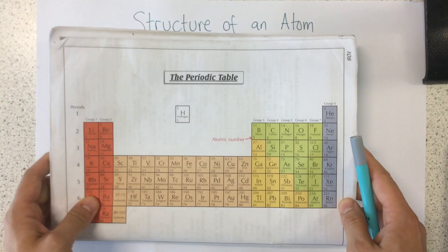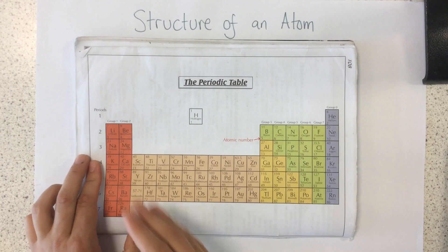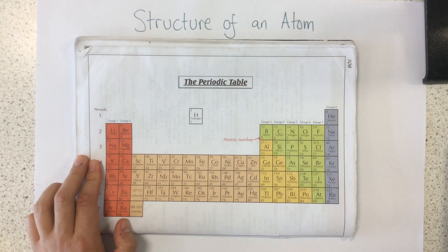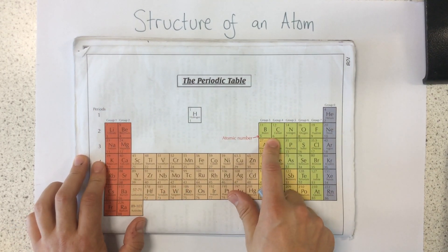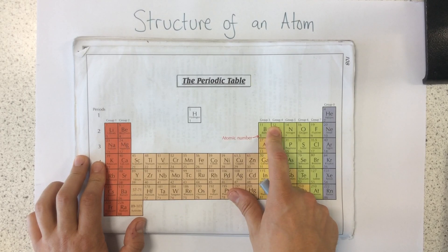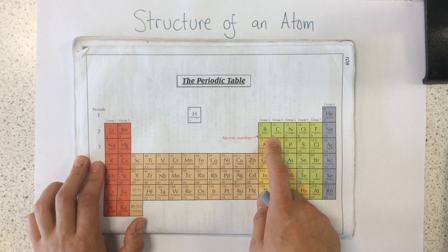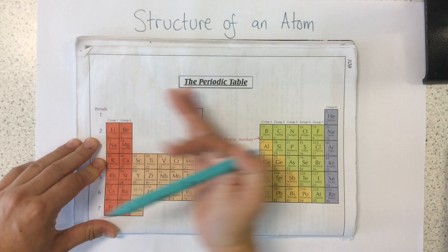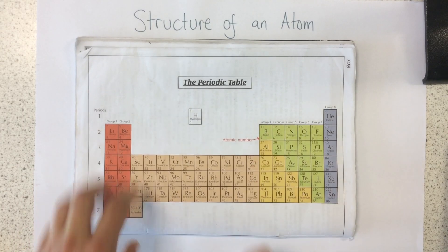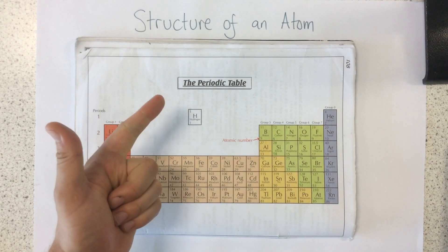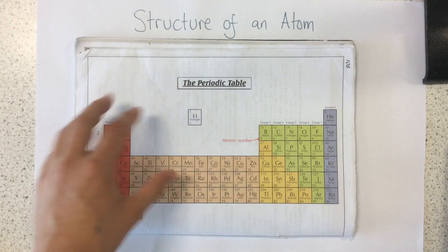So first of all, let's have a look at the periodic table. As we can see, for all of these different elements, they have two numbers. One of them, the bigger one, is called the mass number. The bottom one is called the atomic number, also known as the proton number. So we can see that for each of them, they've got different numbers, and that tells us about the number of protons, neutrons and electrons that are within each atom.